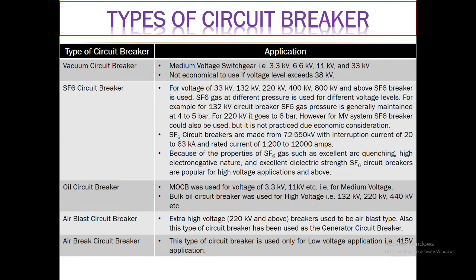Vacuum circuit breakers are normally applied for medium voltage switchgear, ranging from 3.3 kV to 33 kV. Above this voltage level, vacuum circuit breakers are not preferred. If asked how high a voltage vacuum circuit breakers can be used, the correct answer is 33 or 38 kV. Above that, they cannot be applied due to economical constraints. SF6 circuit breakers are used for voltages ranging from 33 kV to 800 kV and above.